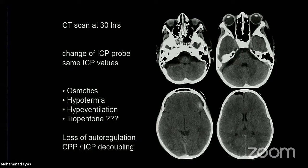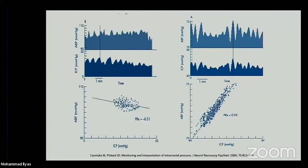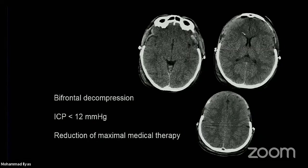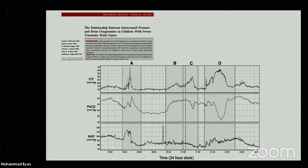We were not trusting the ICP probe so we changed it, but it gave the same high values. What to do now? Osmotic therapy, hypothermia, hyperventilation. The mechanism is probably a sort of loss of autoregulation between CPP and ICP, which is very frequent in kids. What is happening is the PRx line - which is normally flat - in kids frequently shows a loss of autoregulation due to diffuse brain damage. So we went to bifrontal decompression to control ICP - probably a very aggressive attitude - but we obtained a result.